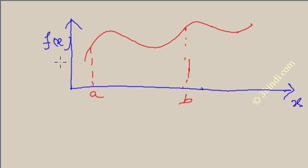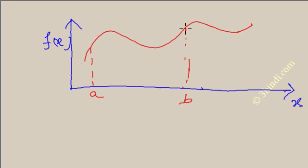The condition for the mean value theorem is that for any function, the graph between A and B should be continuous and differentiable at all points between A and B. In this graph you can see that from point A to point B, f(x) is continuous and differentiable, so the mean value theorem is applicable for this type of curve.